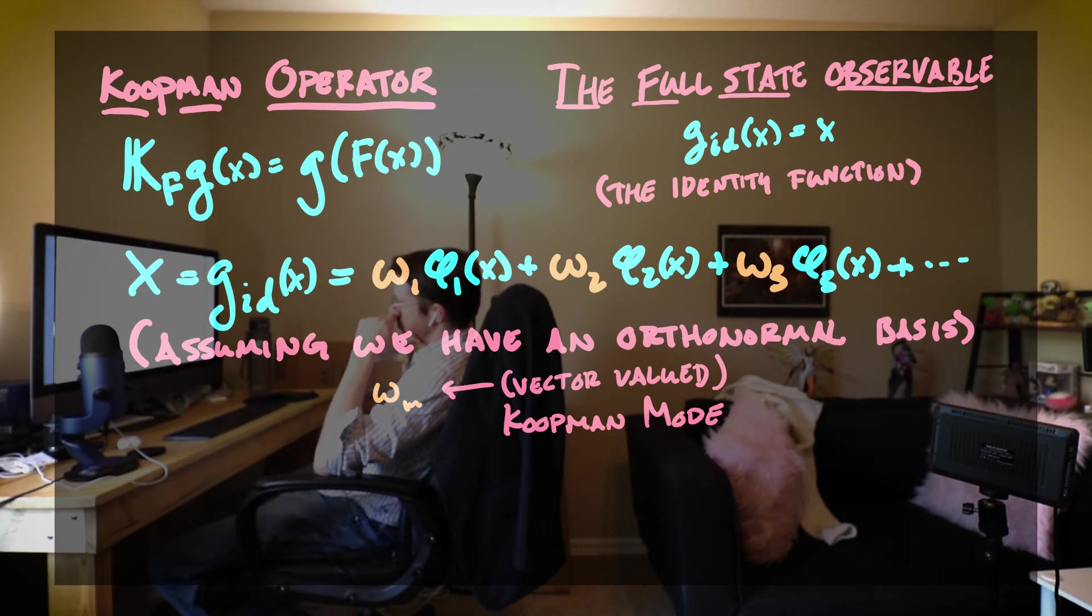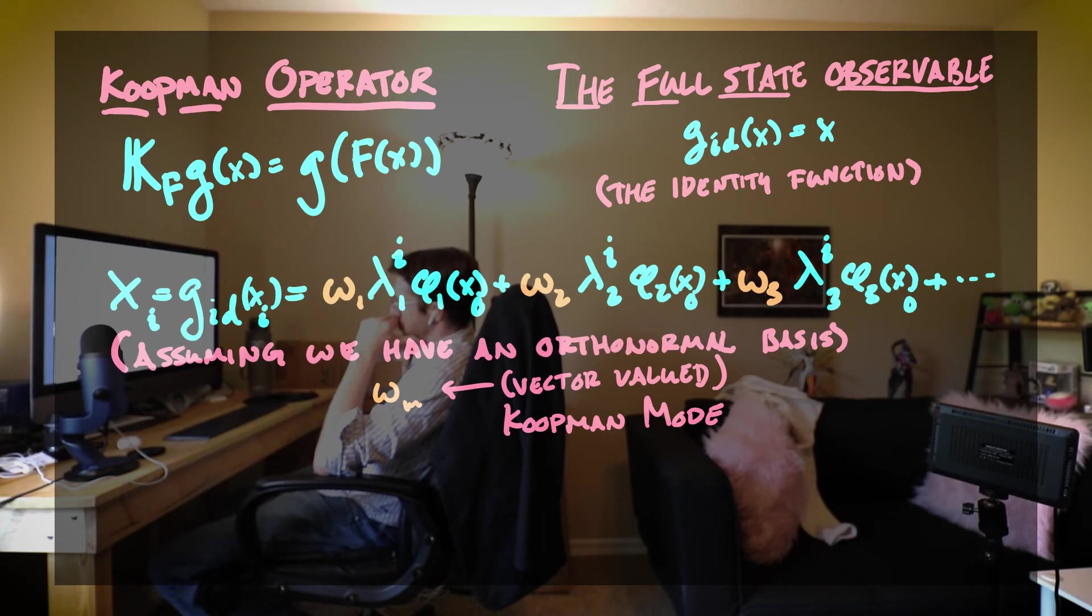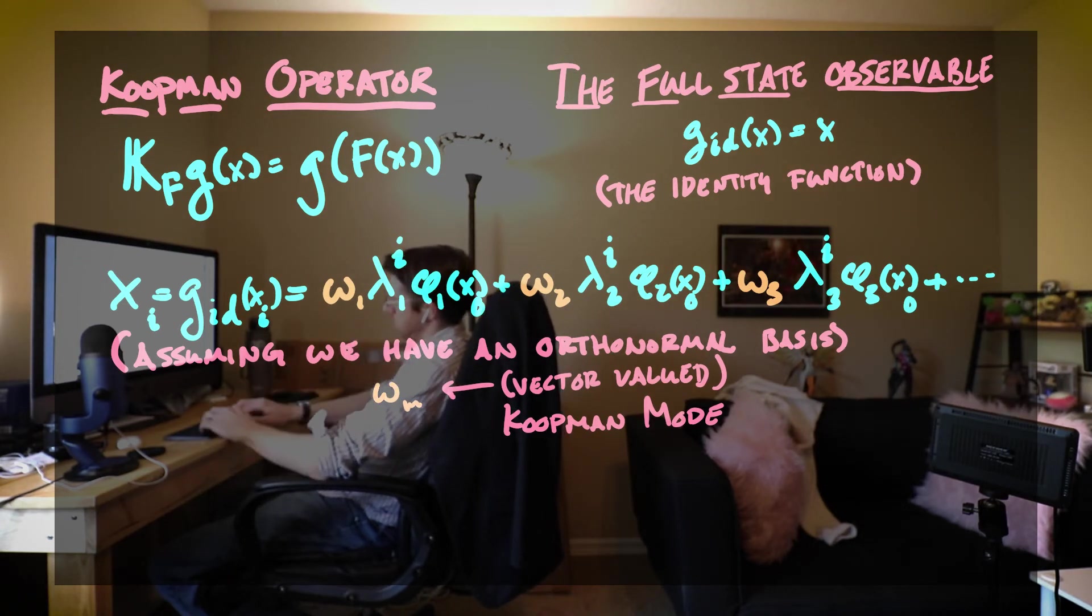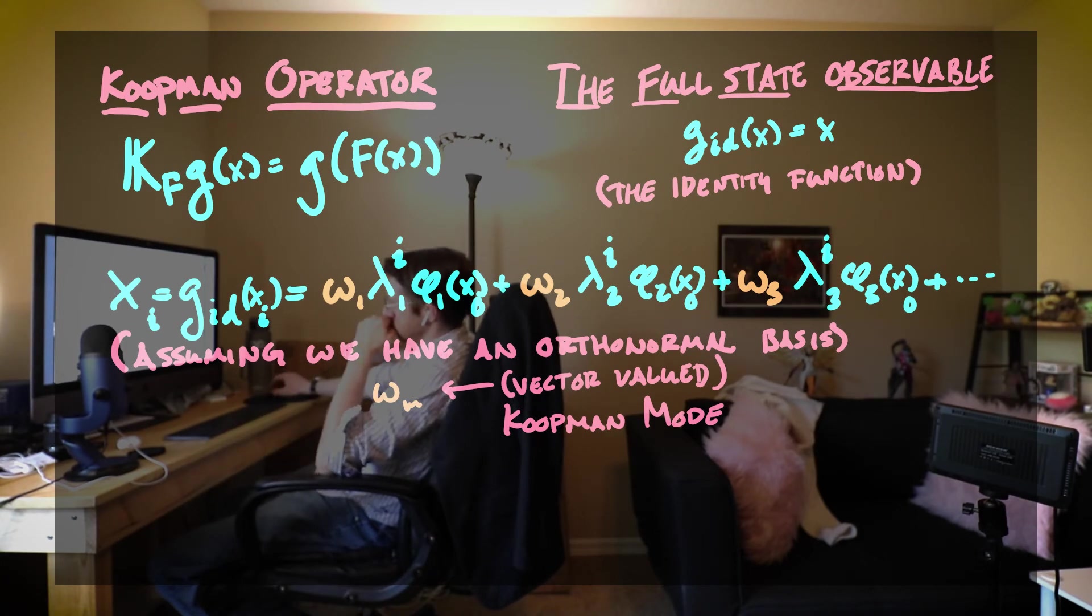If I take a look at the eigendecomposition of the full state observable, what I get are a collection of vector valued weights called Koopman modes and I have my eigenfunctions. What we end up getting is we have a series of these Koopman modes times these eigenfunctions evaluated at xi.